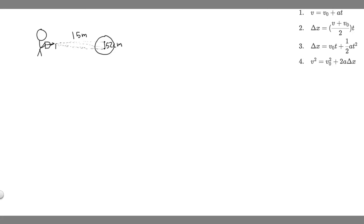In this problem, an archer shoots an arrow horizontally at a target 15 meters away. The arrow is aimed directly at the center of the target but hits 52 centimeters lower. So we have a person shooting an arrow horizontally — it travels 15 meters, aimed for the middle of the target, but it falls down 52 centimeters as a result of gravity.